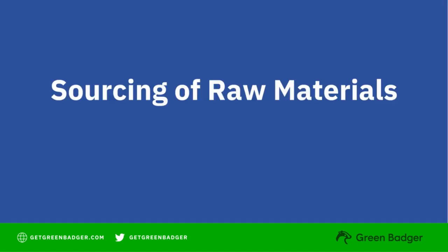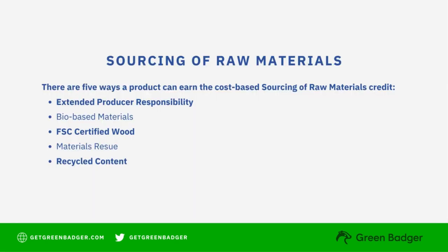Next up is sourcing of raw materials. There are five ways to earn this credit, but most often products have an extended producer responsibility program — a fancy name for a take-back program — FSC certified wood, or recycled content. It's very uncommon to see bio-based materials, salvage materials, or material reuse.